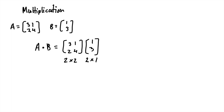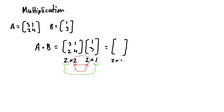We can only multiply two matrices if the columns of one matrix is the same as the rows of the other. When we get the solution, our answer is going to be the shape of the outside numbers — the rows of the first matrix by the columns of the second matrix. So it's two rows in the first matrix and one column in the second matrix, meaning our solution matrix is also going to be two by one.